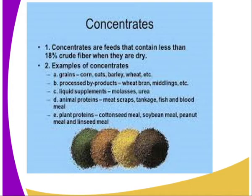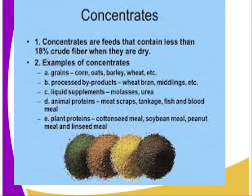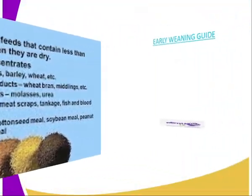Then we have processed byproducts, for example wheat bran. We can also have liquid supplements such as molasses, urea, and animal protein, for example meat meal, fish meal, and blood meal. Number five is plant protein — concentrates made up of plant protein include cottonseed meal, soybean meal, peanut meal, and simsim seed cake meal.